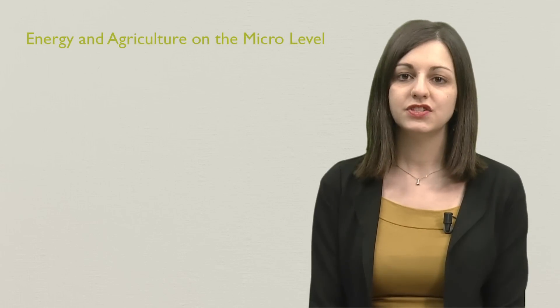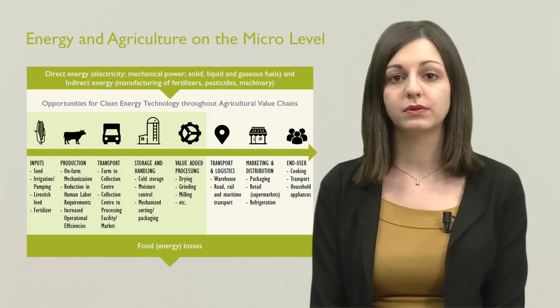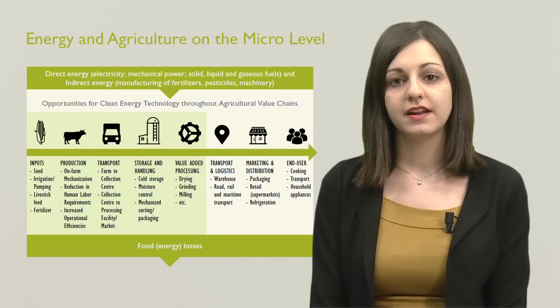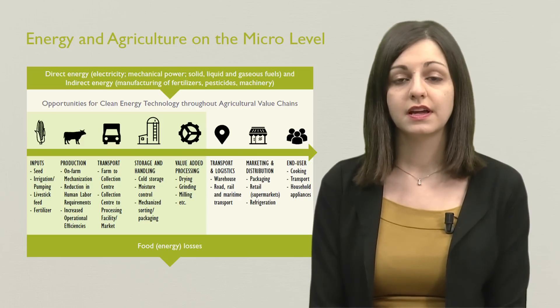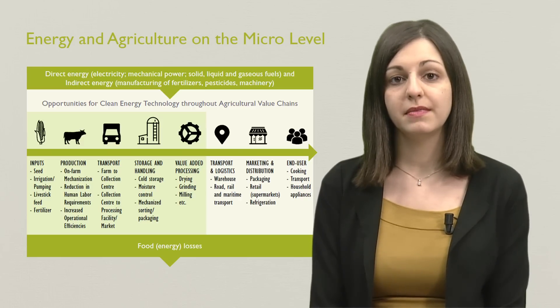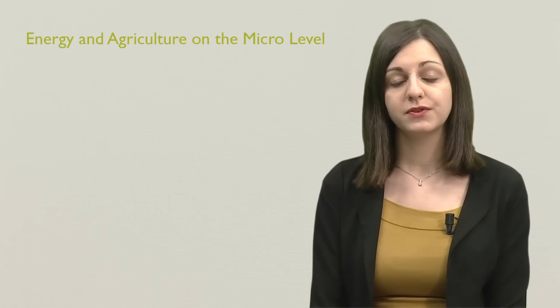Hello everyone and welcome back to the Powering Agriculture massive open online course on Sustainable Energy for Food. Today we are in the sixth week of our course. The topic for this week is Energy and Agriculture on Micro Level, and I am Stefania Bracco from the UN Food and Agriculture Organization in Rome. Energy is an essential input throughout the agri-food chain, and sustainable energy interventions such as renewable energy technologies and energy efficiency options can be adopted by small and medium farmers as well as by large agri-food businesses.